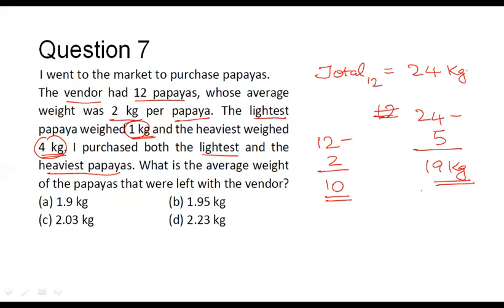So I can see that the sum of the weights of all these 10 papayas, that is 19, number of papayas under consideration that is there with the vendor, that is 10. So what is the average weight of the papayas that was left with the vendor, that corresponds to 19 by 10, that is equal to 1.9 kilograms.